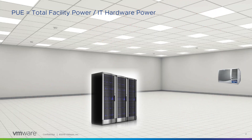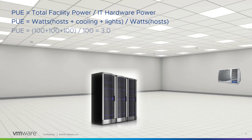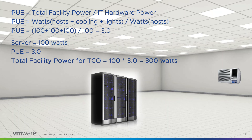To calculate the PUE, we take the total facility power divided by the IT hardware power. In this case, we have the wattage for the hosts, the cooling, and the lights divided by the wattage for the hosts. That's 100 plus 100 plus 100 divided by 100, which gives us a PUE factor of 3.0. So if we know the server takes 100 watts and our PUE factor is 3, then the total facility power for our TCO will be 300 watts.